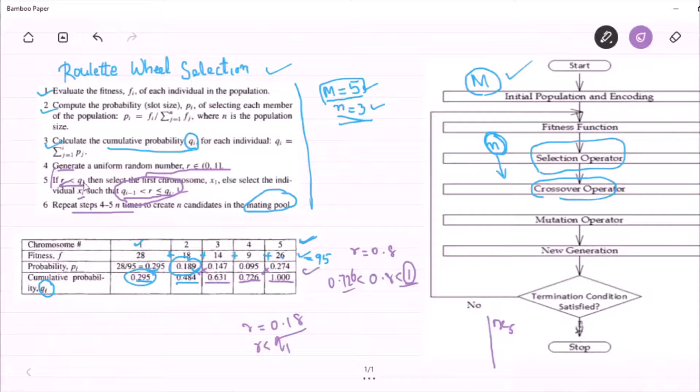If r is less than q1, then select the first chromosome x1 as the selected member into the mating pool. So x1 comes into picture. Whether my n becomes 3? No, not yet.